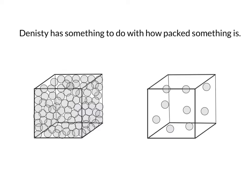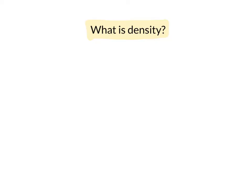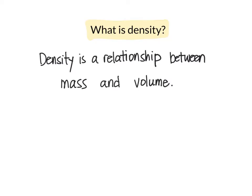Take a look at these two boxes. They are exactly the same size. The one on the left is packed with a lot of stuff. The one on the right, not so much — lots of empty space. Which one has a higher density? The box on the left. So what is density? Density is a relationship between mass and volume. It evaluates how much stuff, or mass, is packed into a specific space, or volume.